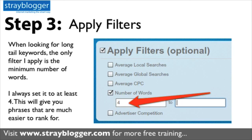Step three, you apply your filters. When I'm looking for long tail keywords, the only filter I apply is the minimum number of words, and I always set it to at least four. If it's a more competitive topic — one that already has a lot of content, information products, and books — there are going to be many more keywords for Long Tail Pro to find, so I'll set it to five or six sometimes. But at a minimum, you want to set this to four. The more keywords that are in a phrase, the easier it is to rank for.